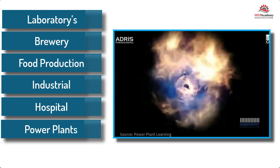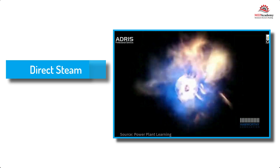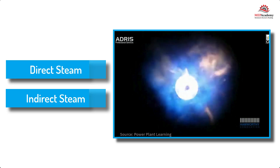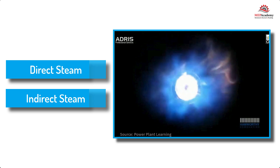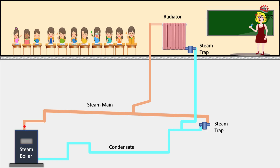There are two basic system types: direct and indirect steam systems. We'll discuss the basic indirect steam heating system.